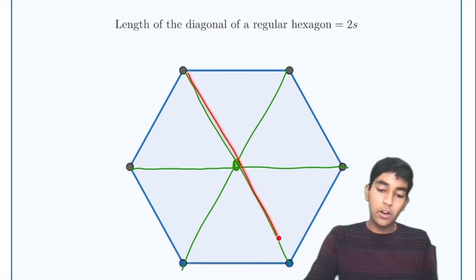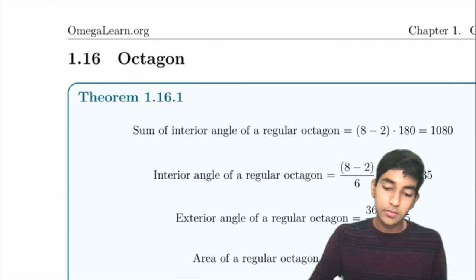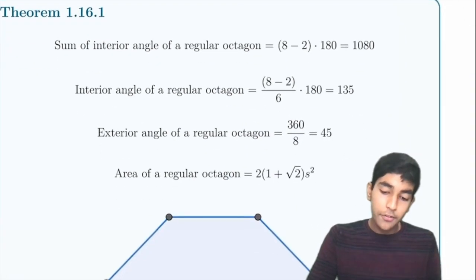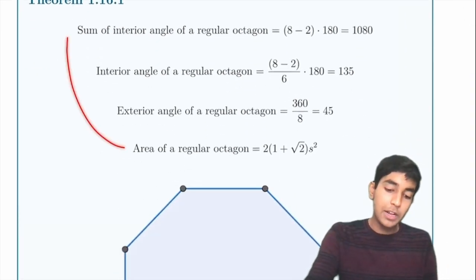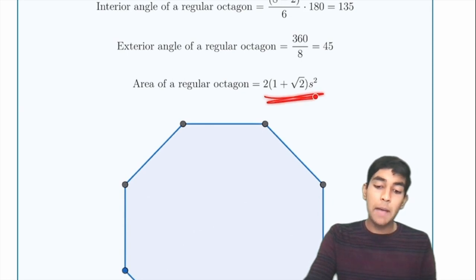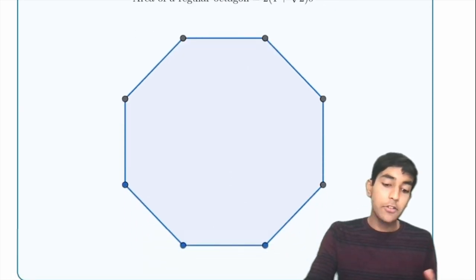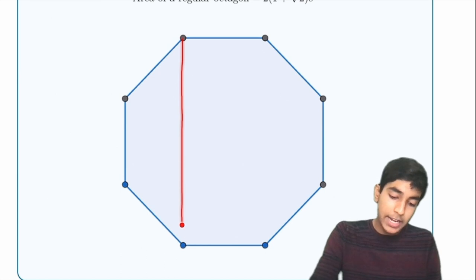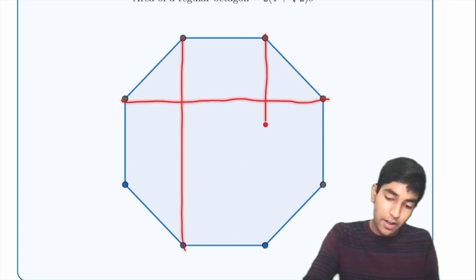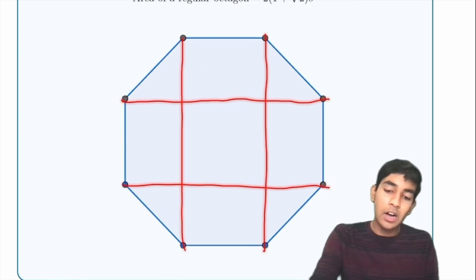For an octagon, the area is 2(1 + √2) × s². You can find this by dividing the octagon and using 45-45-90 triangles. That would give you the area if you forgot the formula.